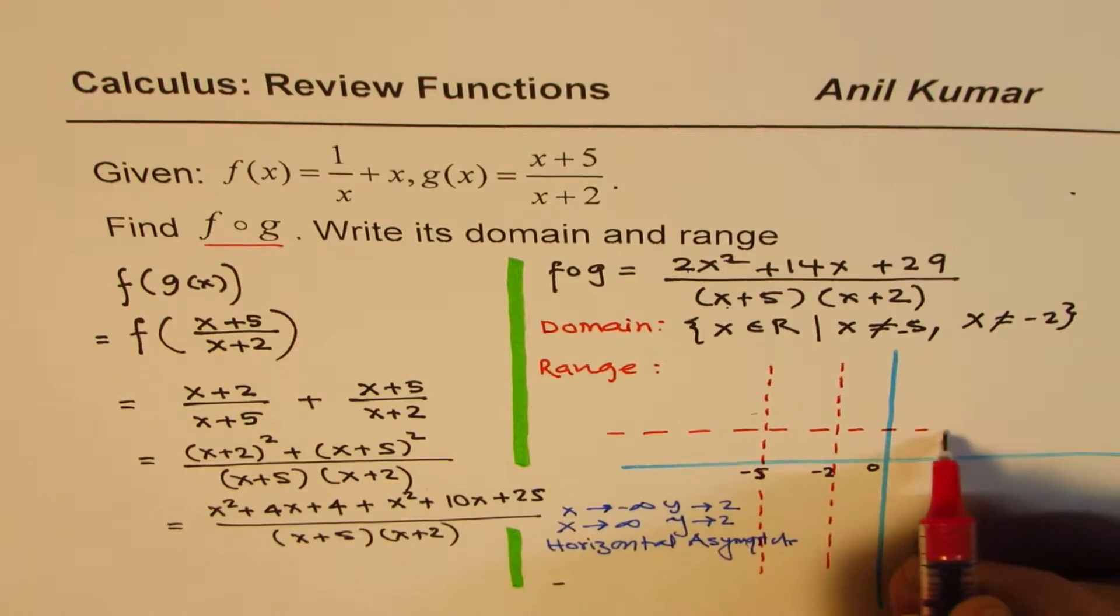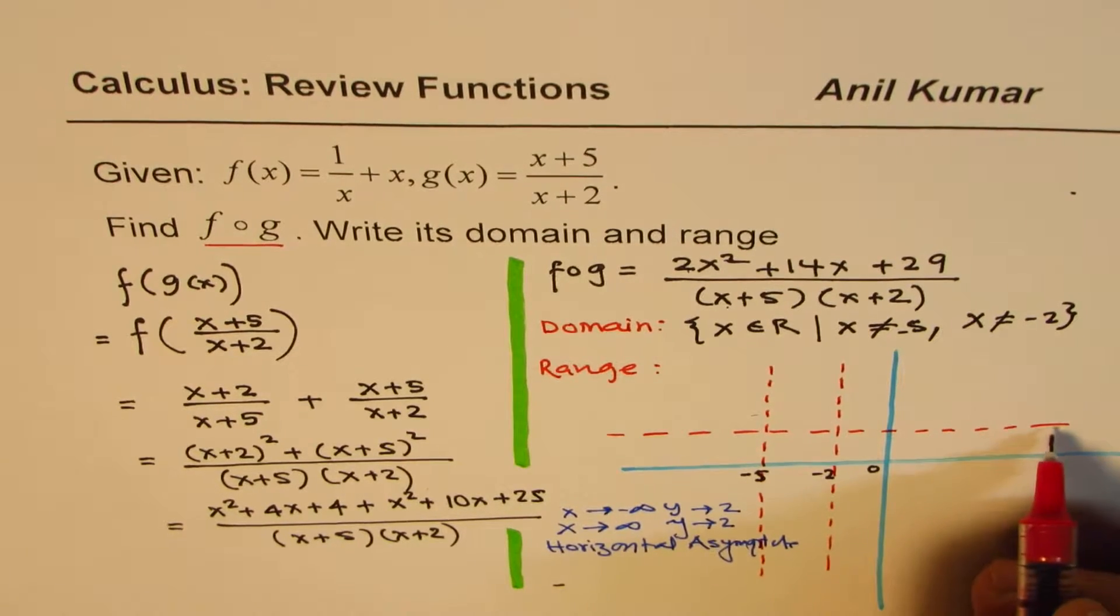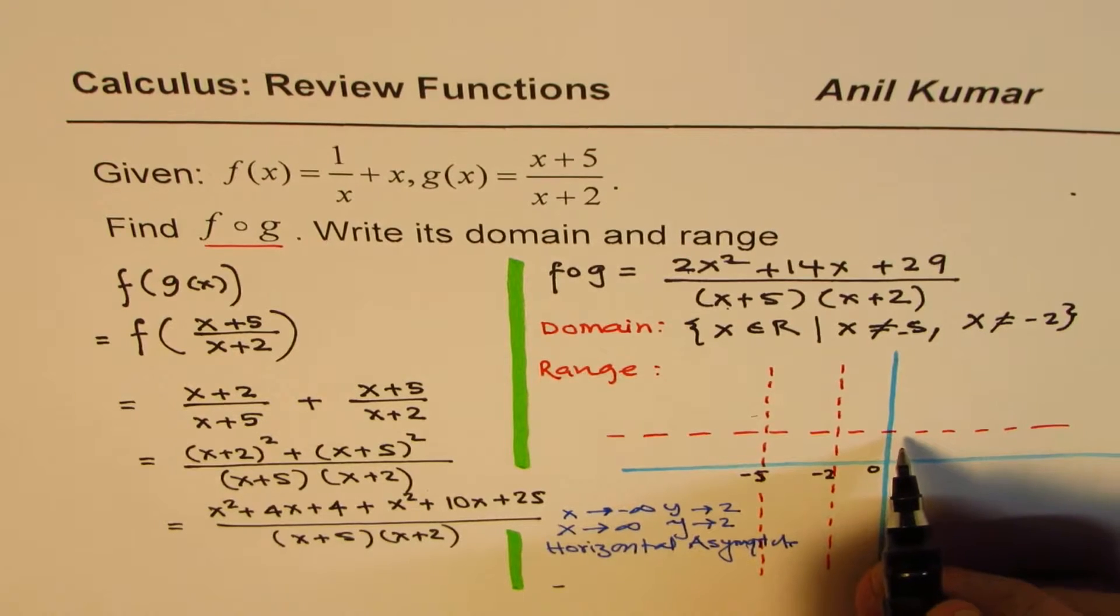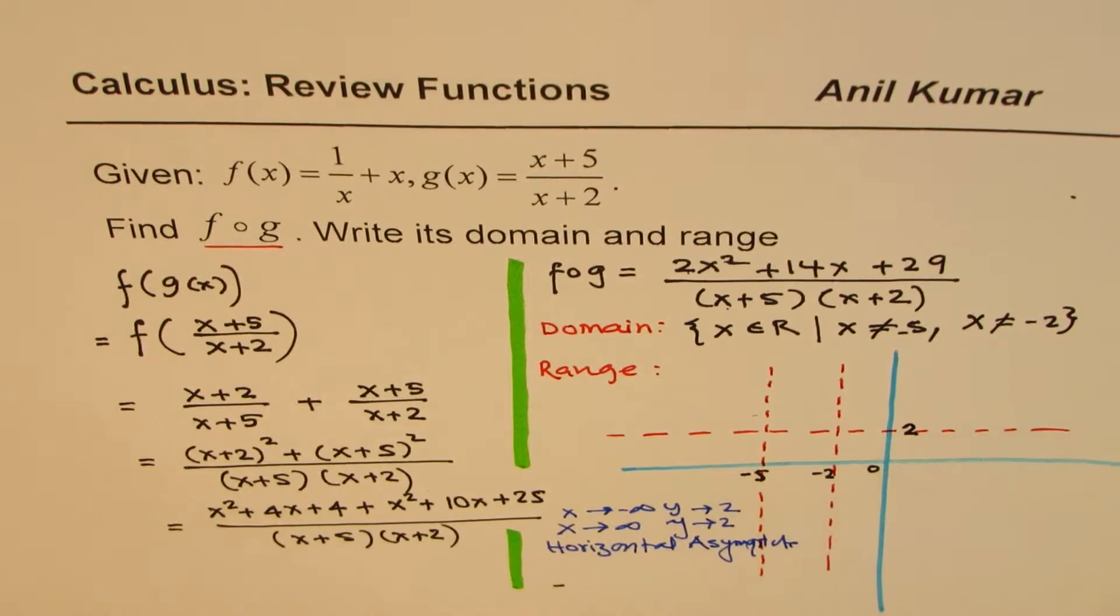Horizontal asymptote really means that y value will never be 2, but it will approach. So from the range, this value 2 is missing. This is one part.